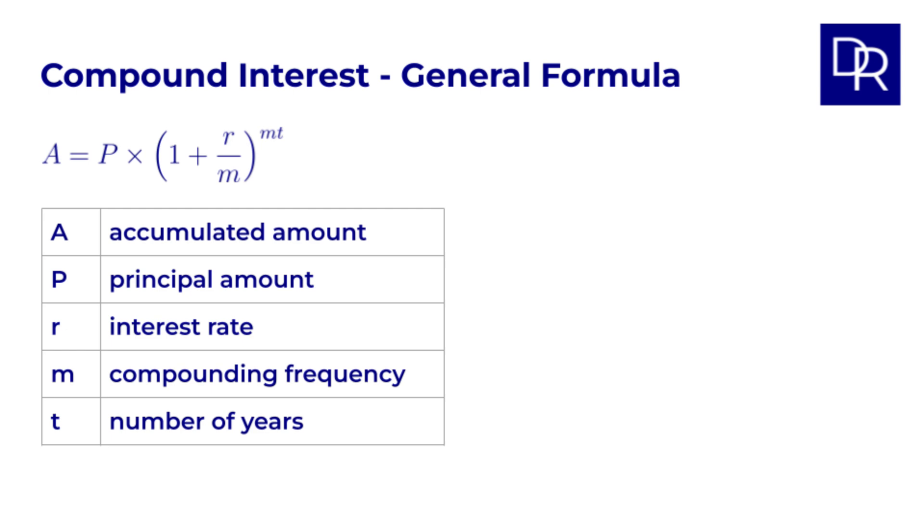We multiply our starting amount P by 1 plus the interest rate r divided by m, which is how many times we receive the interest per year, and that expression to the power of m times t, which is the number of periods per year m times the number of years t. So mt is the total number of periods.